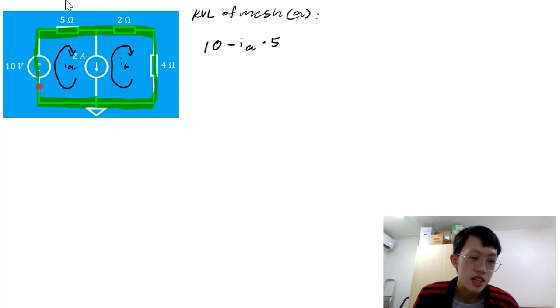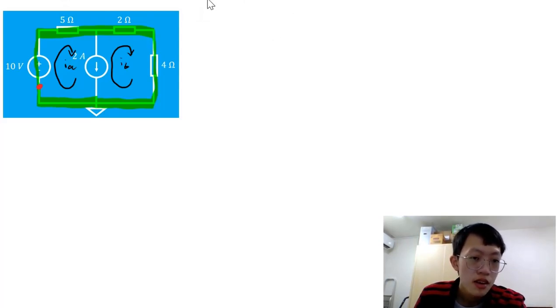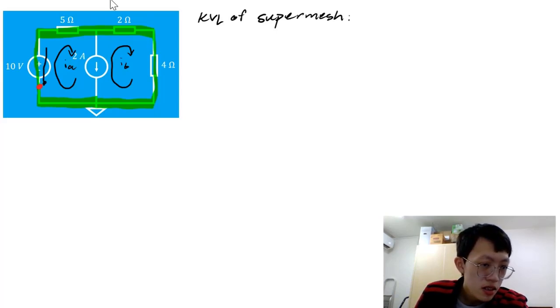So, let's just go ahead and do that. I'm going to keep the supermesh highlighted so we can keep track of where we're supposed to go. Again, we select our starting point. We can just use the same starting point. So, instead of saying KVL of the mesh, I should write the KVL of the supermesh. We'll start from our red dot here. Again, passing through the voltage source. It's a 10 volt gain. So, it's positive 10. No change in that.